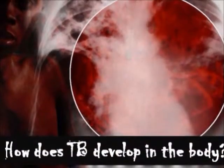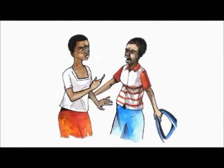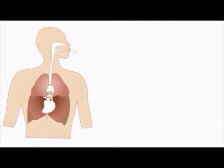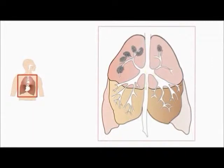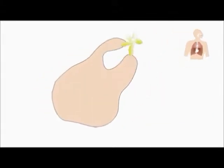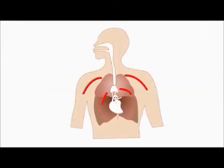How does TB develop in your body? When any affected person coughs, germs are spread into the air and are breathed in by a healthy person. These germs travel through the air and into the body through the nose and mouth, spreading deep inside the lungs to the air sacs. While in the lungs, the body's immune system tries to fight the germs by surrounding and swallowing them. If untreated, tuberculosis travels to other parts of the body.